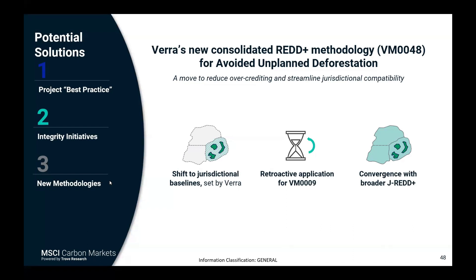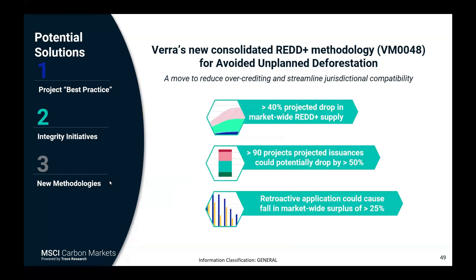The new way of doing baselines has garnered significant market interest. Based on our extensive geospatial baseline assessments, our first estimate suggests the market-wide projected supply of REDD+ credits may drop by over 40%, with over 90 projects potentially losing more than half their projected supply volumes. The retroactive application of the new methodology may drop the market's existing surplus by over 25% — this could be less if not all projects transition, or more if projects voluntarily choose retroactive application for CCP eligibility. We are in the process of updating those projections.